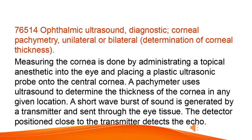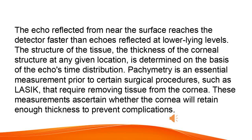Ophthalmic ultrasound, diagnostic, corneal pachymetry, unilateral or bilateral, determination of corneal thickness. Measuring the cornea is done by administering a topical anesthetic into the eye and placing a plastic ultrasonic probe onto the central cornea. A pachymeter uses ultrasound to determine the thickness of the cornea in any given location. A shortwave burst of sound is generated by a transmitter and sent through the eye tissue; the detector positioned close to the transmitter detects the echo. The echo reflected from near the surface reaches the detector faster than echoes reflected at lower-lying levels, and the thickness of the corneal structure at any given location is determined on the basis of the echo's time distribution.